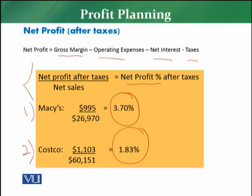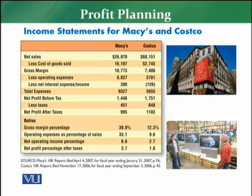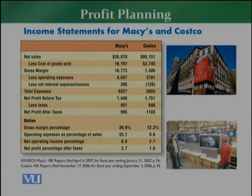To summarize the entire journey: the full income statement we discussed step by step covers everything from net sales to net profit. The retailer must study the income statement as the key component of profit planning. The four major components are: net sales, gross margin, operating expenses, operating income, and finally net profit after tax.